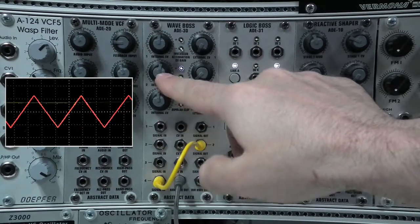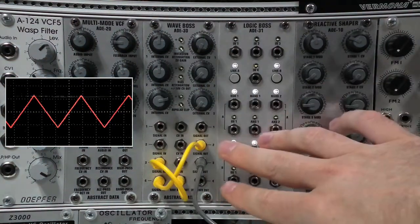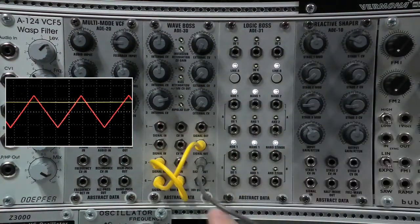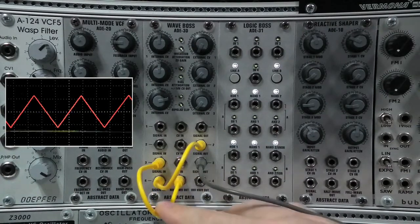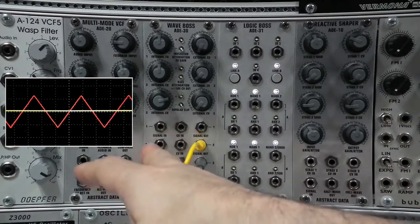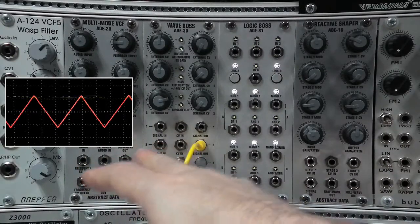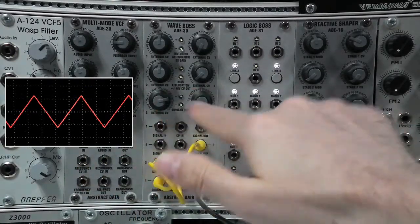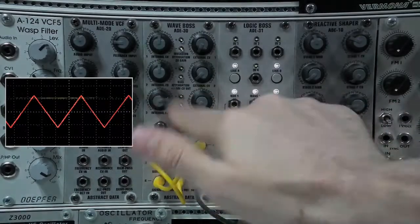And now the third part of getting this working is to run the output of stage four to the input of stage three. Now you can see that not only is stage four blocking any negative content, you should be able to see that on the scope shot, but it's also limiting, stage three is limiting the maximum positive voltage.